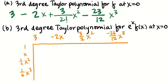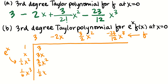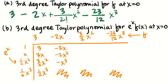I'm going to use the box method to multiply these. Along the top I have the third degree polynomial for f; along the side is the third degree polynomial for e to the x, both centered at x equals 0. Multiplying everything by 3 down one column gives 3x, 3/2 x squared, and 3/6 equals 1/2 x cubed. Multiplying everything by negative 2x gives negative 2x, negative 2x squared, and negative 1 x cubed. Any terms of degree higher than 3 — like x squared times x squared giving x to the fourth — I can ignore those.